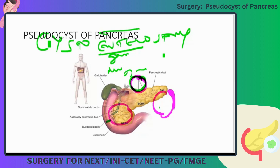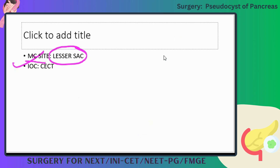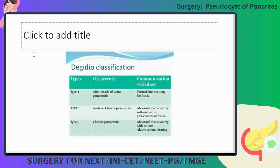The most common site is the lesser sac. The investigation of choice is ERCP. Most of the range, it is ERCP only — the investigation of choice is ERCP.